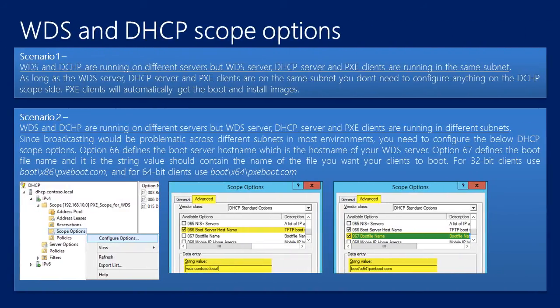There are a couple of things you need to make sure when it comes to setting up your WDS and DHCP scope options. Scenario one: WDS service and DHCP service are running on different servers, but your WDS server, DHCP server, and PXE clients are all on the same subnet. If you have this kind of setup, you will not run into any problems. As long as the WDS server, DHCP server, and PXE clients are on the same subnet, you don't need to configure anything on the DHCP scope — PXE clients will automatically get the boot and install images from the WDS server.